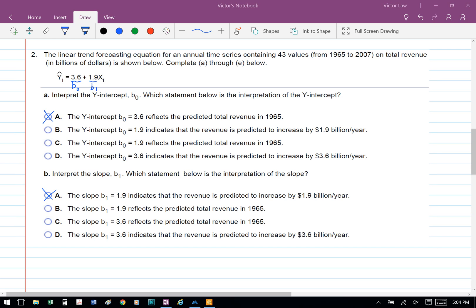In Part B, we're asked to interpret the slope B1, which is 1.9. That's a positive value, so what that means is we're expecting the total revenue to increase by 1.9 billion dollars per year.